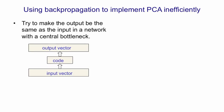So it looks like this. We have an input vector. We project that onto a code vector. And from the code vector, we construct an output vector. And the aim is to make the output vector as similar as possible to the input vector.